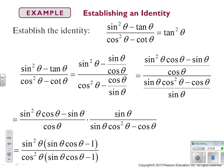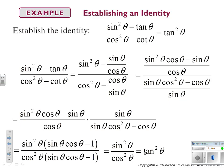Dividing by a fraction is the same as multiplying by the reciprocal. When we multiply through and factor, the numerator has sin²θ factored out to give sin θ(sin θ · cos θ − 1), and the denominator has cos²θ factored out giving cos θ(sin θ · cos θ − 1). The (sin θ · cos θ − 1) terms cancel, leaving sin²θ over cos²θ, which equals tan²θ.